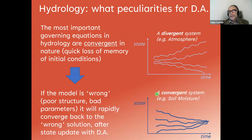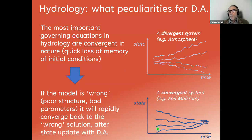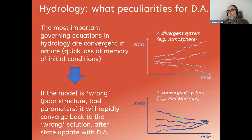A convergent system is a desirable characteristic in terms of general predictability, but it has a strong drawback in terms of data assimilation. Even if with data assimilation you capture the right initial condition, if the model is wrong — by structural inadequacy, wrong parameter estimate — after a while it will converge rapidly to the wrong solution, regardless of the data assimilation. So as we will see clearly in some examples, there is a low persistency of the benefit of data assimilation in most hydrologic problems.